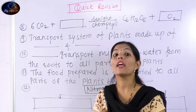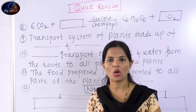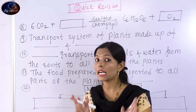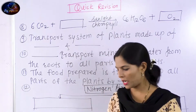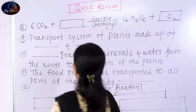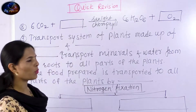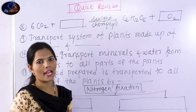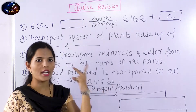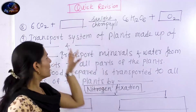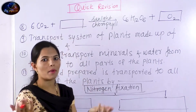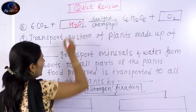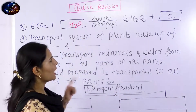This is a chemical equation for photosynthesis. It is very important to know. What are the reactants of photosynthesis? Carbon dioxide and water — these are the two inputs.